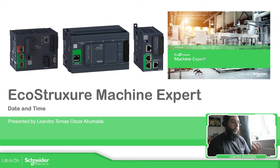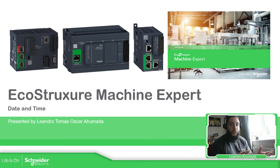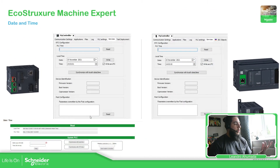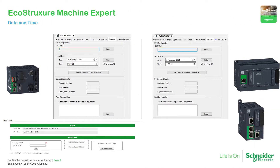The idea is to change the date and time for these three devices that we have over here. You can use what I'm going to show you using SoMachine if you haven't migrated yet to EcoStruxure Machine Expert. If you're using SoMachine you can use only this part, but if you're using EcoStruxure Machine Expert you can expand this to use the M262.